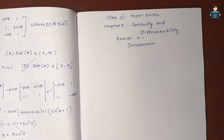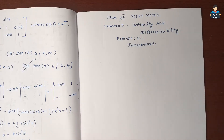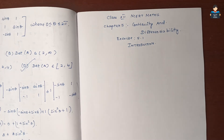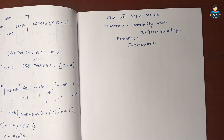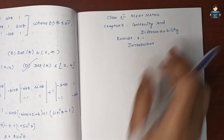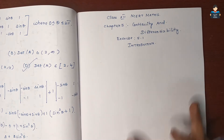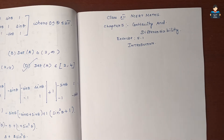Hello everyone, welcome to our channel. In this video, Class 12 NCERT Maths Chapter 5 Continuity and Differentiability, Exercise 5.1, introduction part one. So, what is continuity? Continuity means one continuous line, one continuous curve — drawn in one stroke, without any barrier.